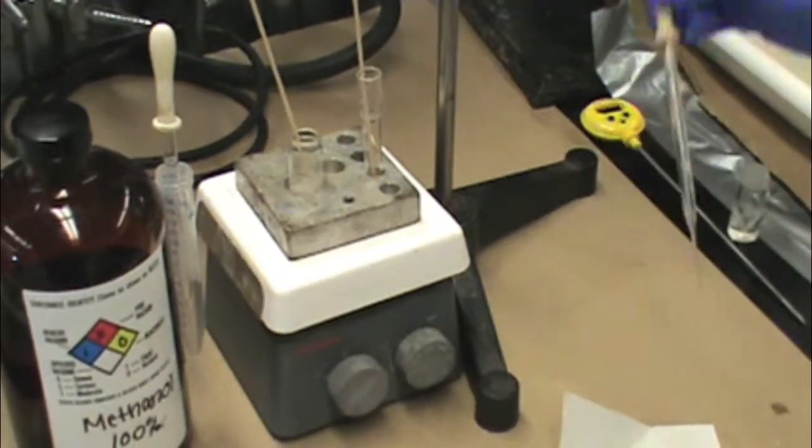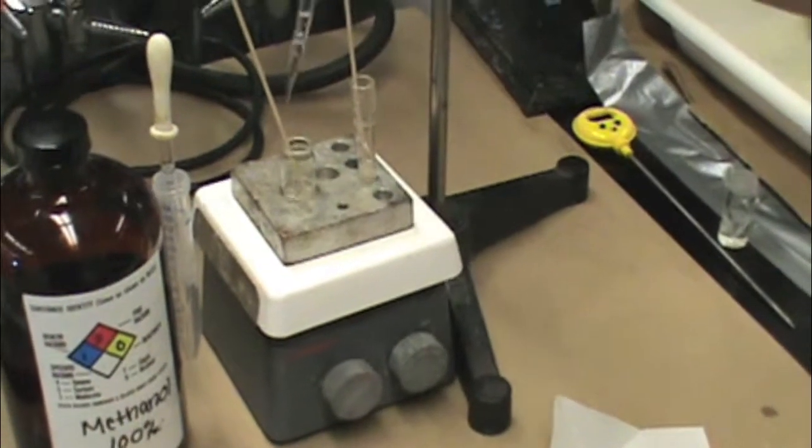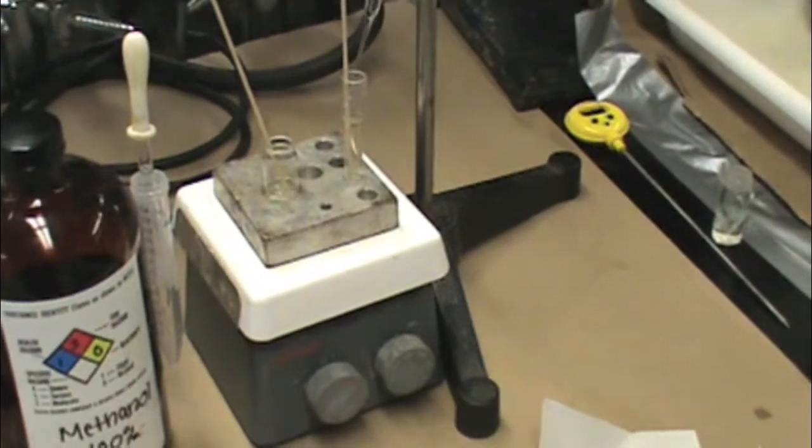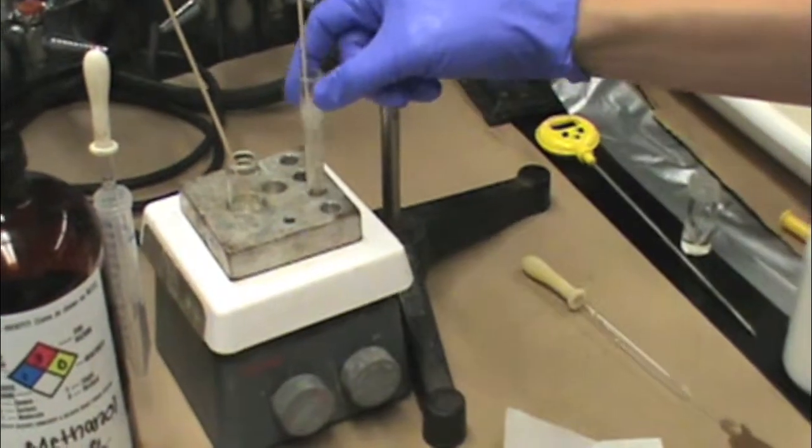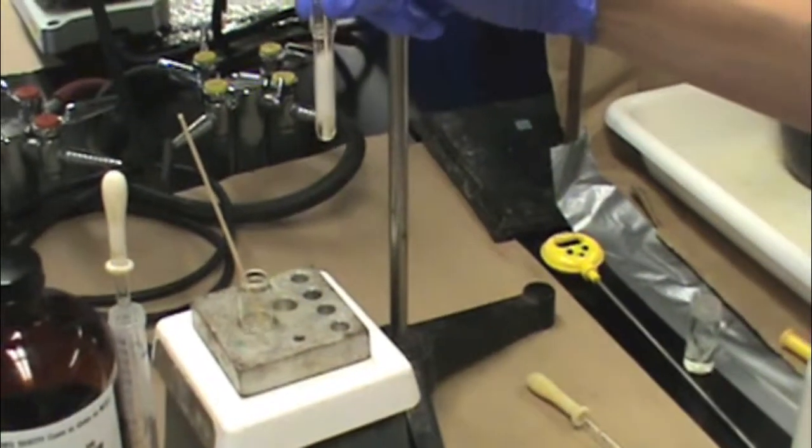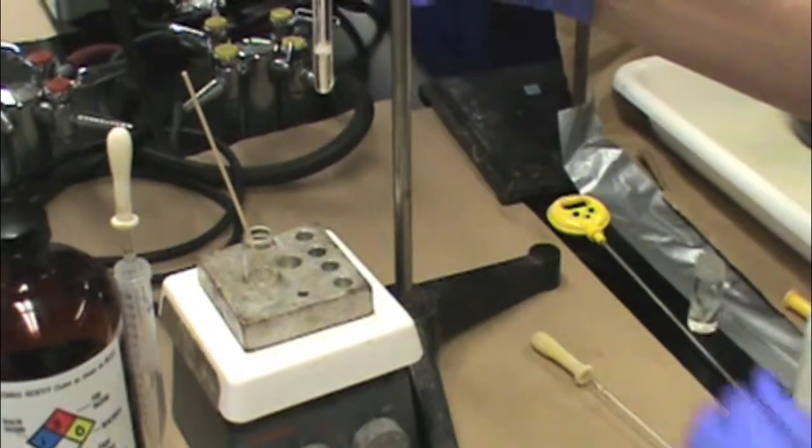Now you'll want to add a few milliliters of your boiling solvent. You will notice that it's a vigorous reaction, so you'll want to keep an eye on it. The solid dissolves pretty fast, and you can pull it off the heating block.